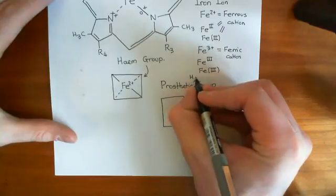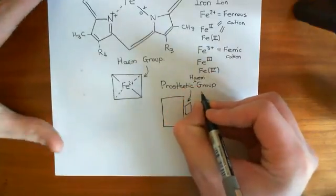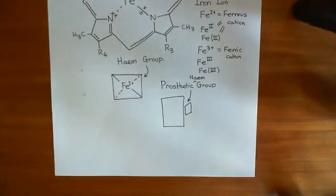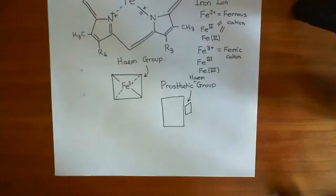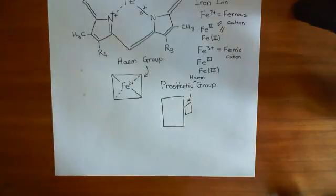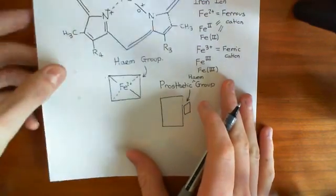There are other prosthetic groups — you can add other structures onto the side of proteins other than just heme groups — but heme groups are a good example. When you add a heme group to the side of a protein, that's called a prosthetic heme group. Now let's see an example of how you can add a prosthetic heme group onto a protein, via a specific amino acid, which is generally histidine.